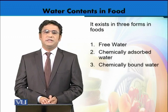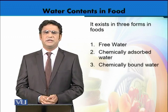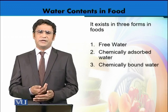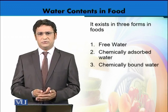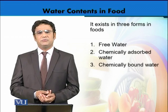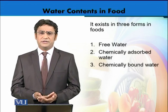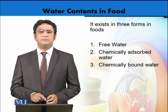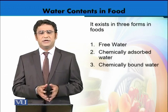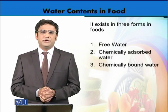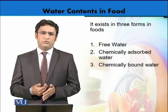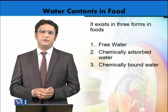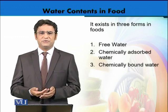The third form of water is chemically bound water. This is basically a water molecule that is attached to another molecule, like water of hydration. For example, sodium sulfate has 10 water molecules attached to it, becoming part of the molecular structure and molecular weight of that compound. This is the most difficult water to remove from food products when we dry those foods.